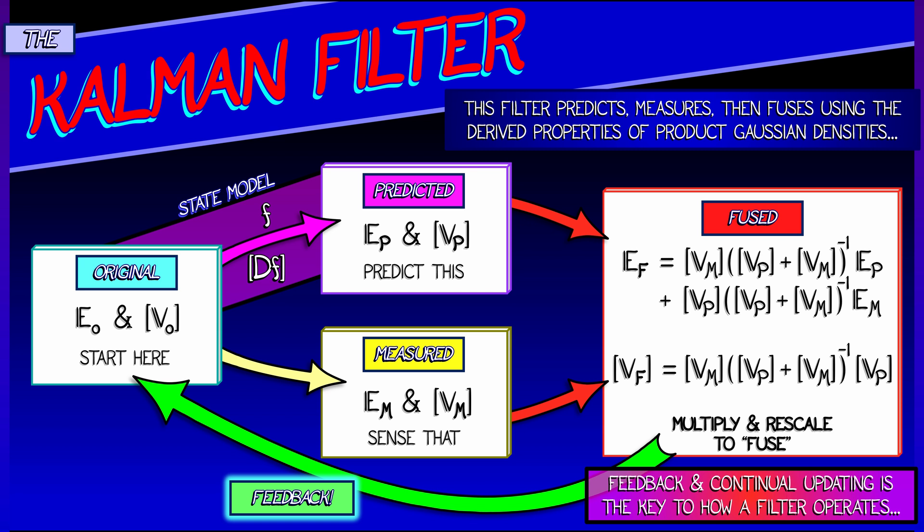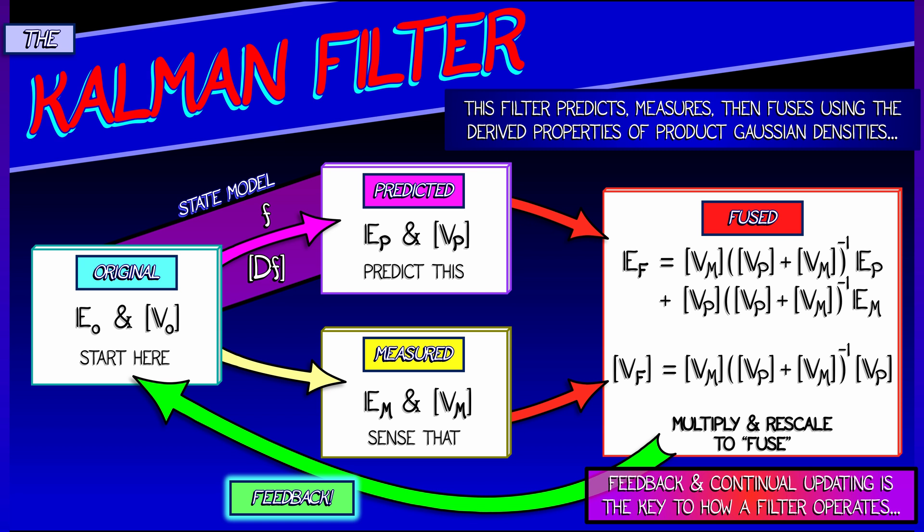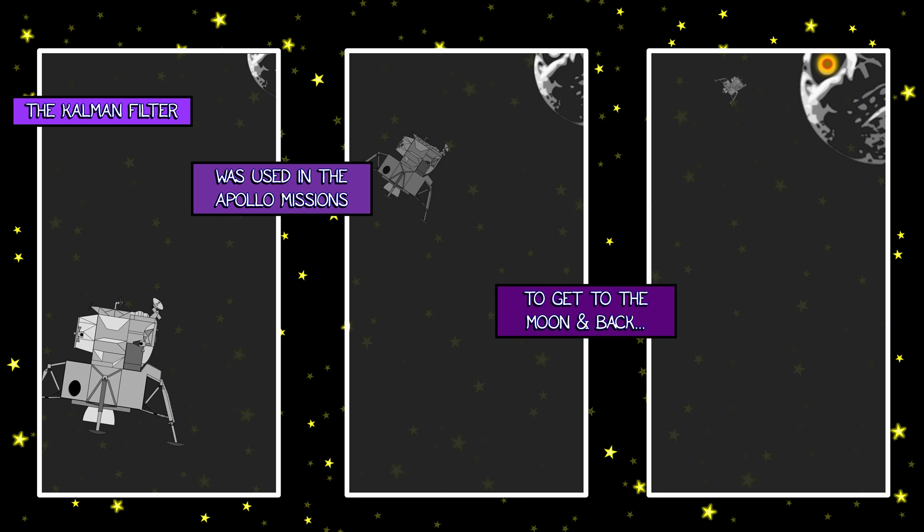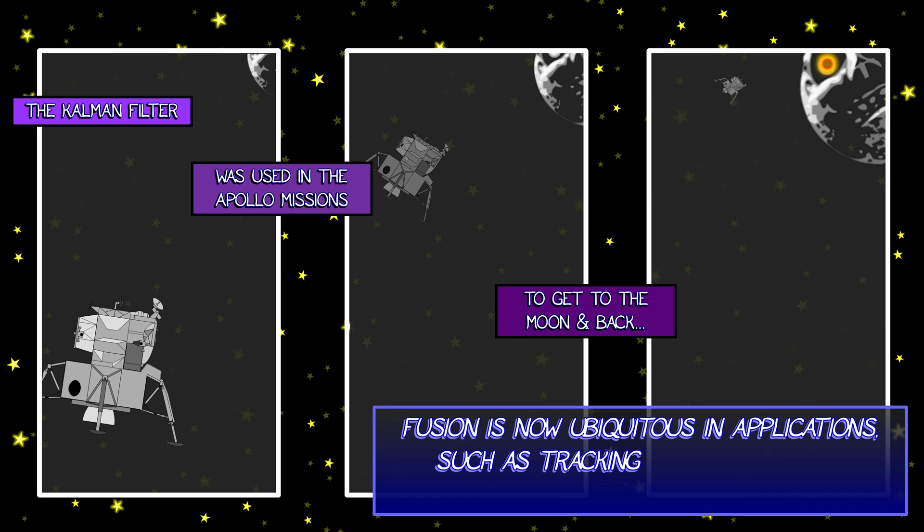Now, does this stuff really get used in practice? Oh yes, it is so incredibly important. The Kalman filter was used way back in the Apollo missions, back in the 20th century, in order to get to the moon and back safely. It's not an exaggeration to say that the Kalman filter was one of the critical pieces in why this worked.